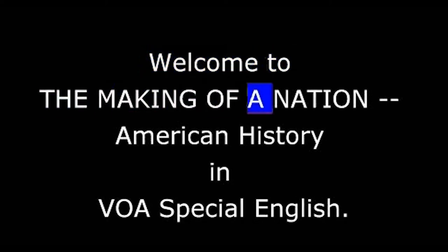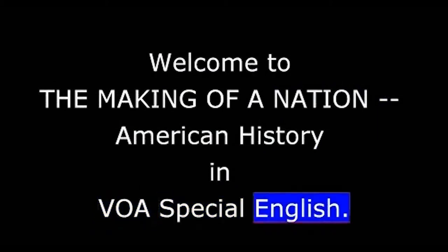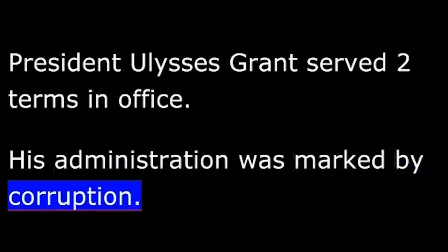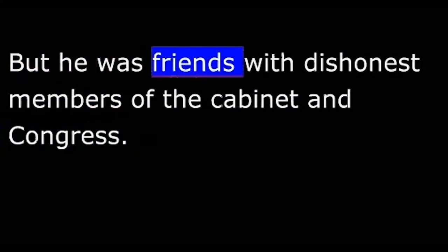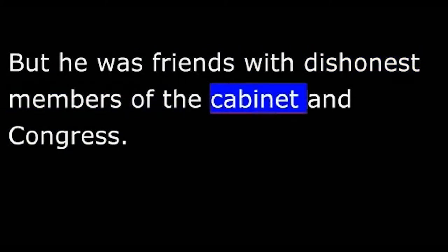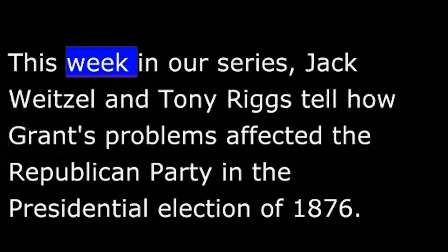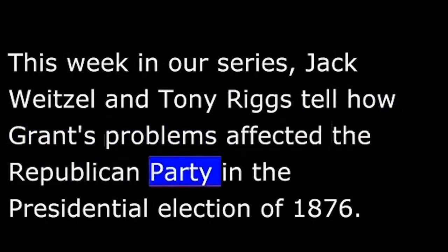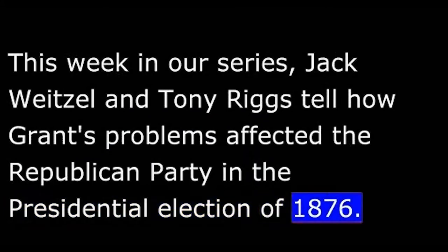Welcome to The Making of a Nation, American History in VOA Special English. President Ulysses Grant served two terms in office. His administration was marked by corruption. The president himself was not linked directly to any of the incidents, but he was friends with dishonest members of the Cabinet and Congress. This week, Jack Weitzel and Tony Riggs tell how Grant's problems affected the Republican Party in the presidential election of 1876.